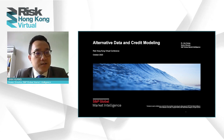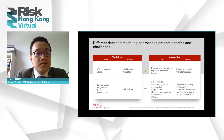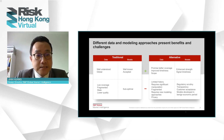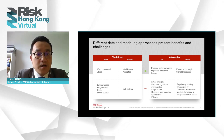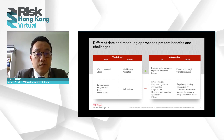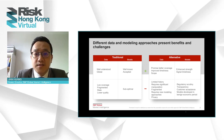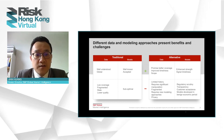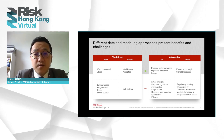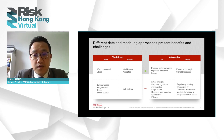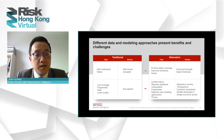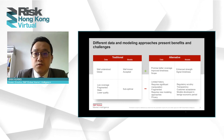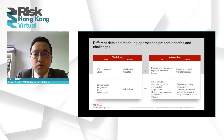While traditional data such as company financials are still the key input in credit analysis, alternative data are becoming more relevant for credit risk modeling in recent years. As you can see in this slide, alternative data has the advantages of being more timely, having broader coverage, and covering more dimensions. Alternative data can also be used to enhance analytical model performance.